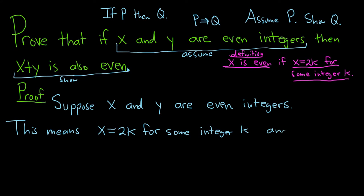And it means that y equals 2, now we can't use the same letter, right? We cannot guarantee it's the same one. So let's say y equals 2n for some integer n. Okay, so we've written down our hypothesis, we assumed x and y were even, we wrote down what it meant for x to be even, and this is what it means for y to be even.